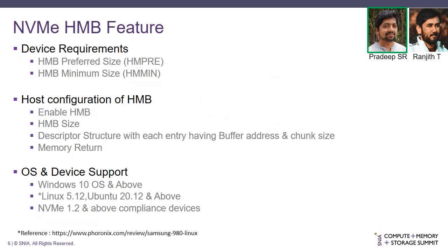The HMB feature has been supported from NVMe 1.2 specification and above. This feature works in the following order: initially, the device showcases its capabilities and requirements through the identify data structure, where it can indicate the preferred size via the HMPRE parameter. If HMPRE is 0, HMB is not supported; if it is non-zero, HMB is supported. When non-zero, two parameters inform the host of the preferred size for optimal output, and if that is not feasible, the device also specifies the minimum expected size.